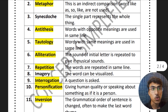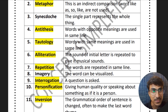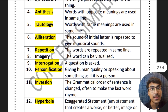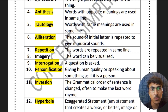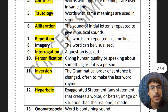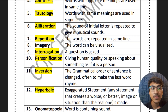Then tautology — words with the same meaning are used in the same line. Then alliteration — the sound of the initial word is repeated to give it a musical sound, so the initial word gives you a musical sound — that's alliteration. Then repetition — words are repeated in the same line.